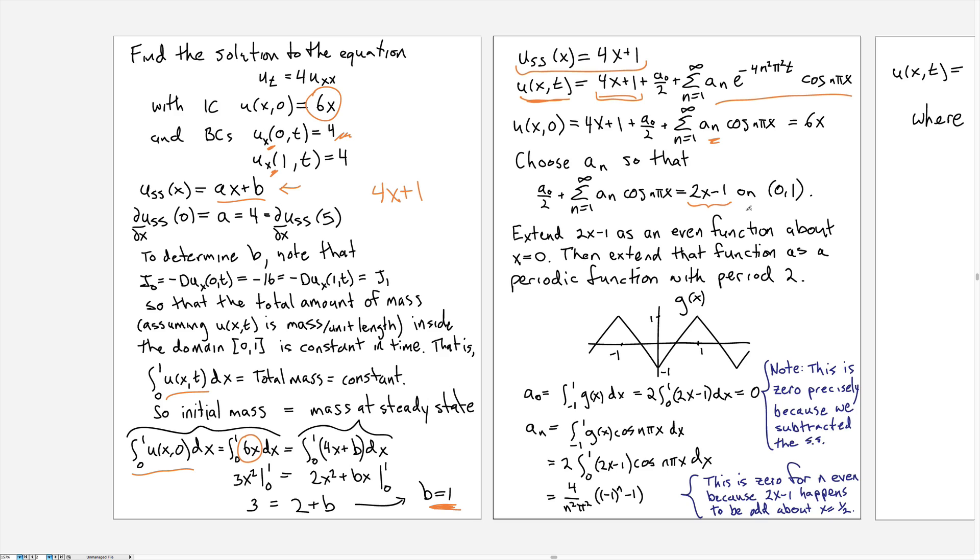Which we got when we brought the 4x + 1 over to the other side and subtracted it off the 6x. So how do we build the Fourier series that has no sine terms? Well, as before, we take our original function 2x - 1 and we extend it this time as an even function.